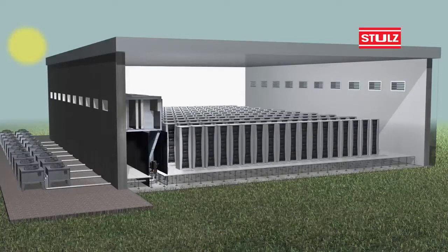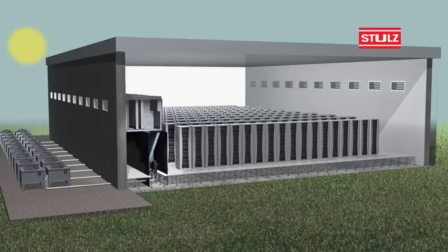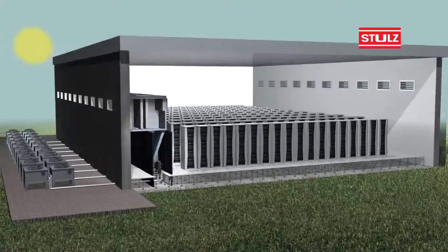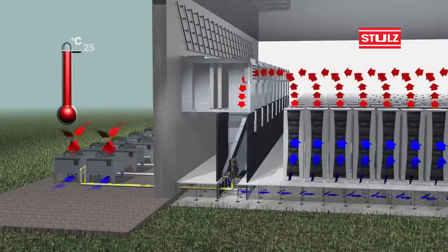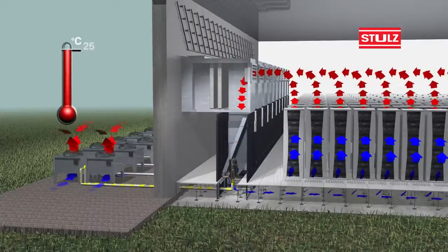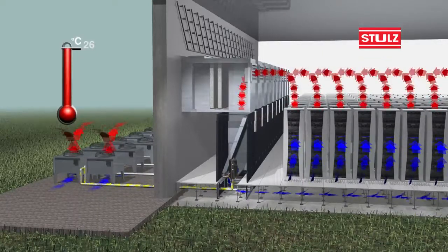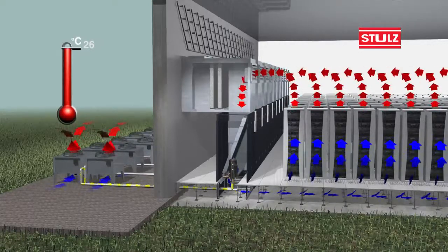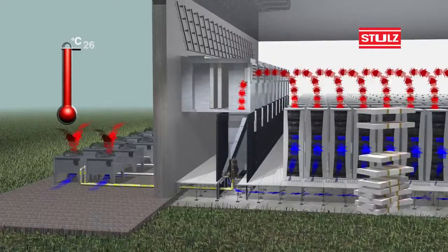At outside temperatures over 24 degrees Celsius, the system works automatically in traditional air circulation mode with refrigeration-based cooling through integrated compressors. Energy costs are highest using this method.